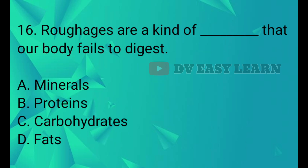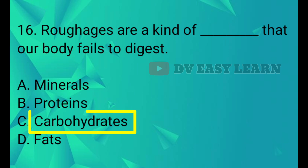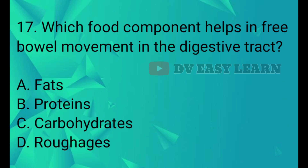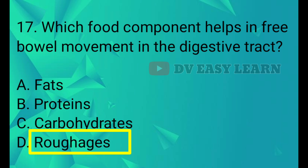Q16. Roughage is a kind of what that our body fails to digest? Answer: Carbohydrates. Q17. Which food component helps in free bowel movement in the digestive tract? Answer: Roughage.